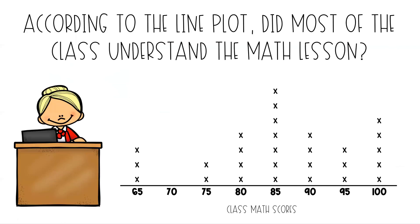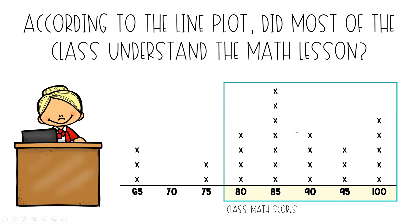So according to the line plot, did most of the class understand the math lesson? Looking at this range — 80%, 85%, 90% — any of these scores would show that a student pretty much understood the lesson. The lower scores of 75%, 70%, 65% — if there were a lot down there, that would mean the class really didn't understand. As a teacher, I might go back and work with those students. But for the majority of the class, I would say yes, they did understand the math lesson.